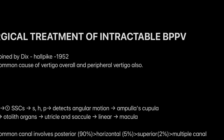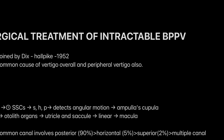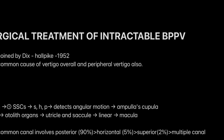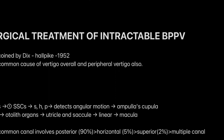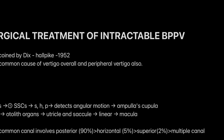This term was coined by Dix-Hallpike in 1952. BPPV is the common cause of peripheral vertigo and overall vertigo. In the vestibular system, there are two systems: one is the semicircular canal, and the second is the otolithic organ like utricle and saccule. The utricle and saccule have macula, and the semicircular canal has cupula and ampulla. These two systems are responsible for vertigo.